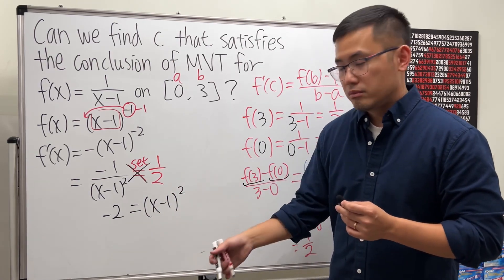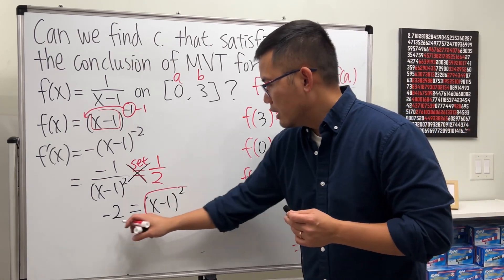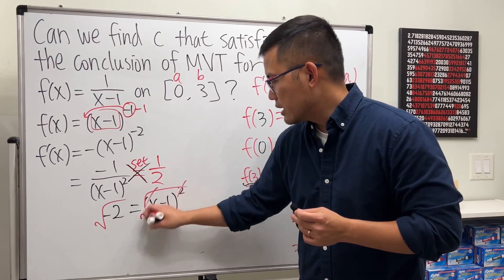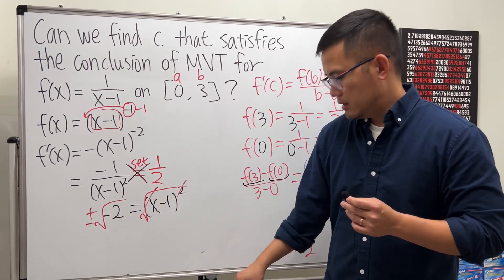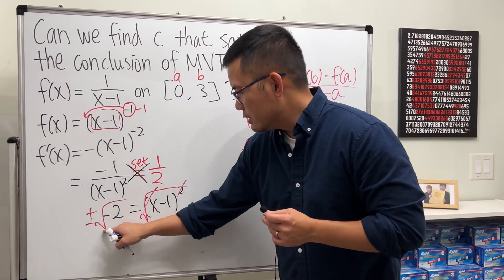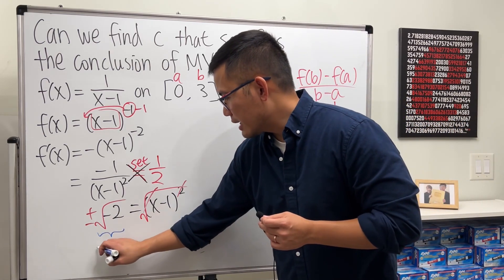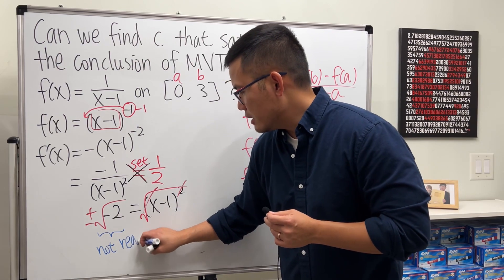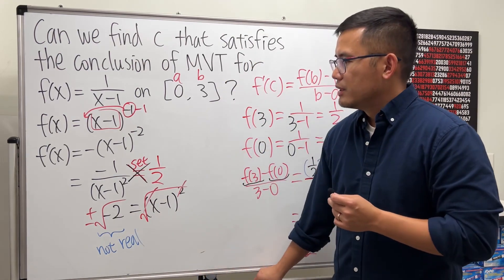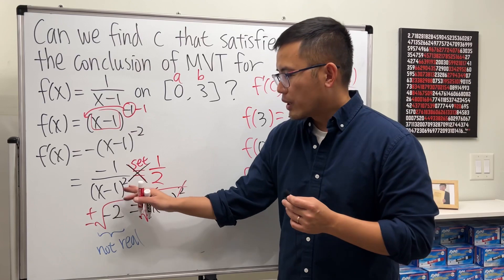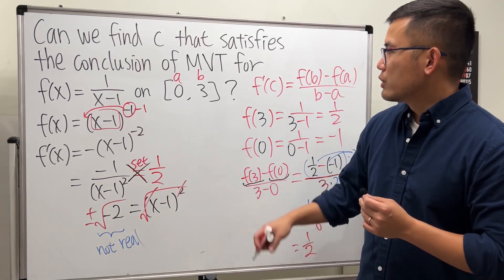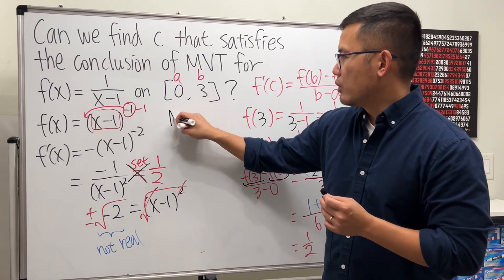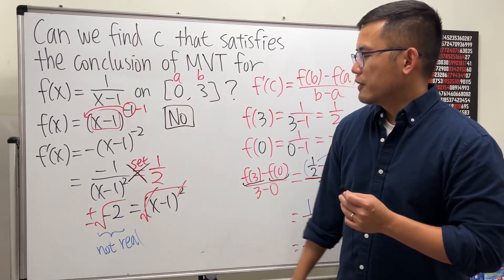Can we do it? If we take the square root here and square root here, this and that cancel. And if you want to put plus minus, go ahead and be my guest. But as you can see, this right here is not real. You get a complex number for this. So in another word, this right here, you don't have a solution. So there is no c right here. So the answer for this is no. Cannot find a c for that.